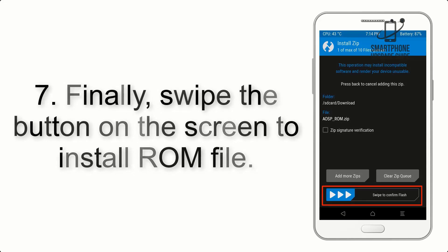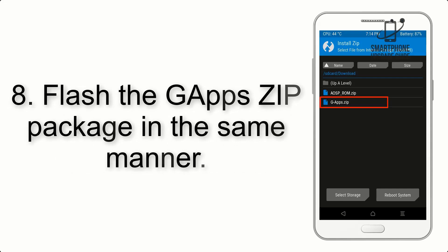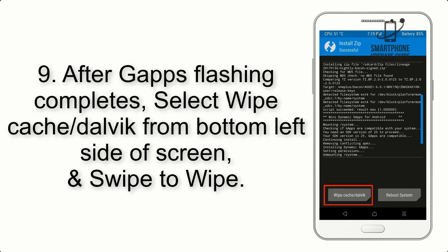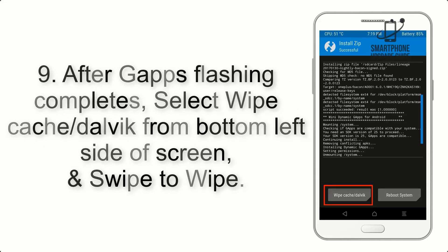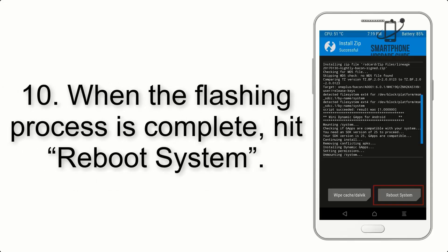Step 7: Swipe the button on the screen to install the ROM file. Step 8: Flash the GApps zip package in the same manner. Step 9: After GApps flashing completes, select Wipe Cache and Dalvik from the bottom left side of the screen and swipe to wipe.